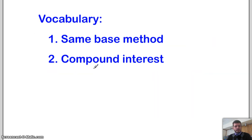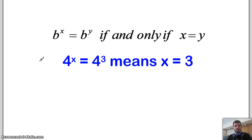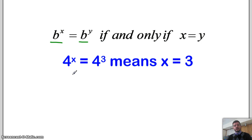A couple of things you might need to know: the same base method and compound interest formulas. So here is the same base method. If my bases are the same and they have different exponents, then the exponents are equal as well. These can only be equal if x equals y. So if I have 4 to the x equals 4 to the third, that means x equals 3. What we have to do is get them to be the same base, then set their exponents equal to each other, and solve.